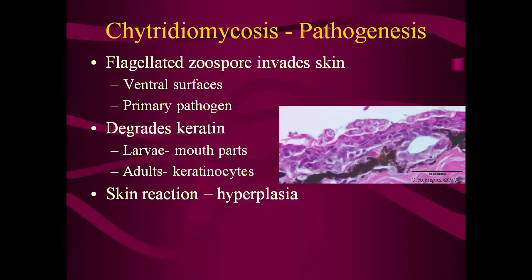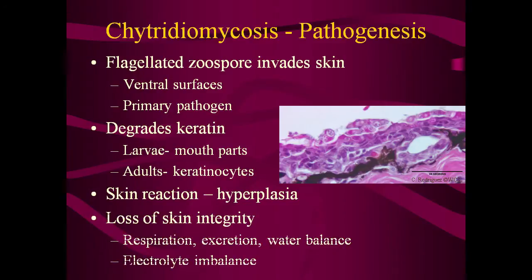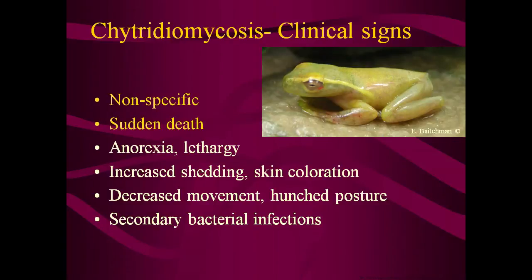The skin reacts with hyperplasia of keratinocytes and results in a breach of the integrity of the skin. As amphibians rely on their skin for respiration, excretion, and water balance, any insult to the skin can be life-threatening. Recent research suggests this fungus appears to cause death by inducing electrolyte imbalances. Clinical signs are frequently nonspecific and the most common presentation is sudden death. If the disease takes a longer course, you may see anorexia and lethargy. More specific signs may include increased shedding, changes in skin coloration, or a reluctance to move and hunched posture to avoid substrate contact with the ventrum. Secondary bacterial infections are also common.